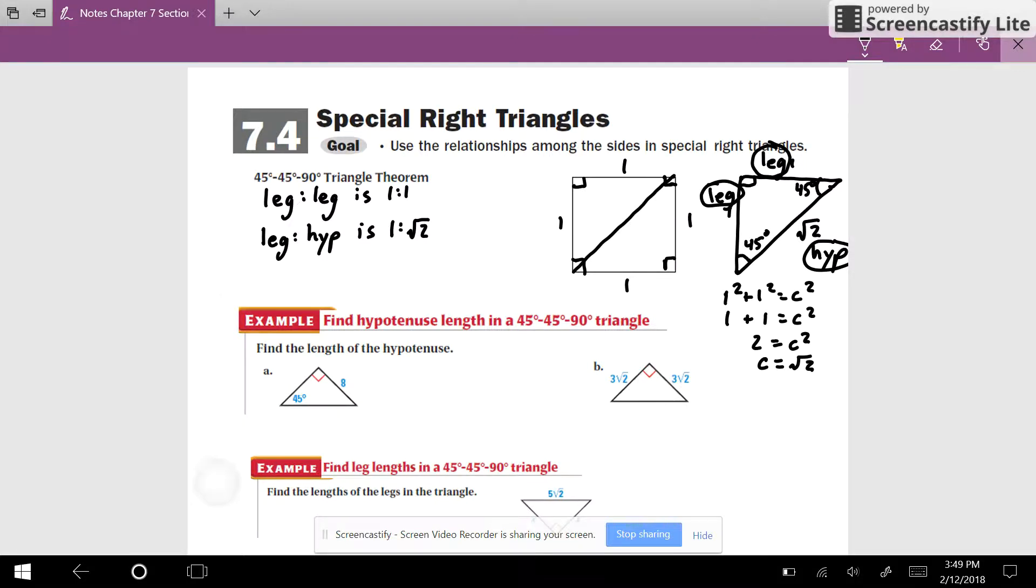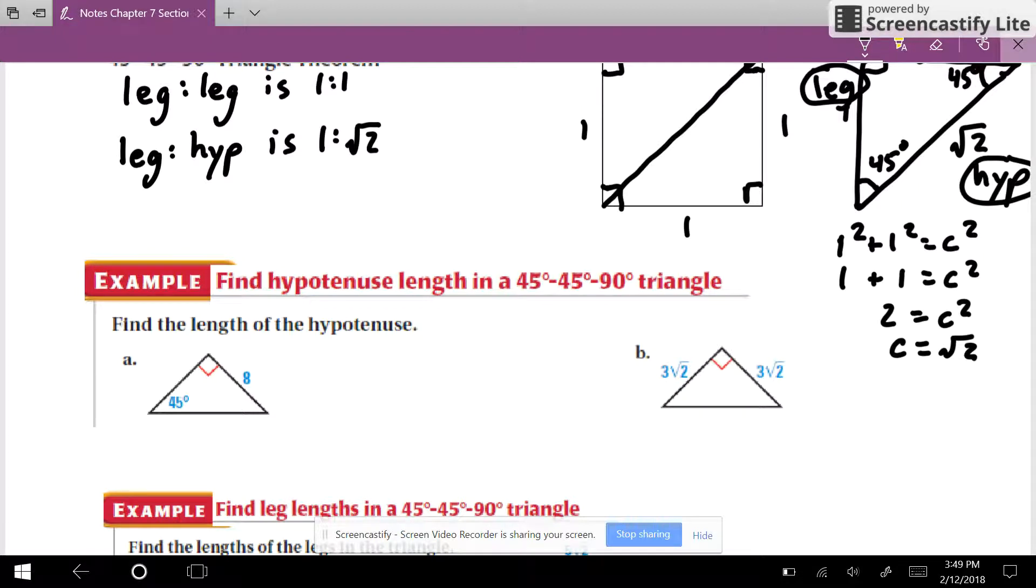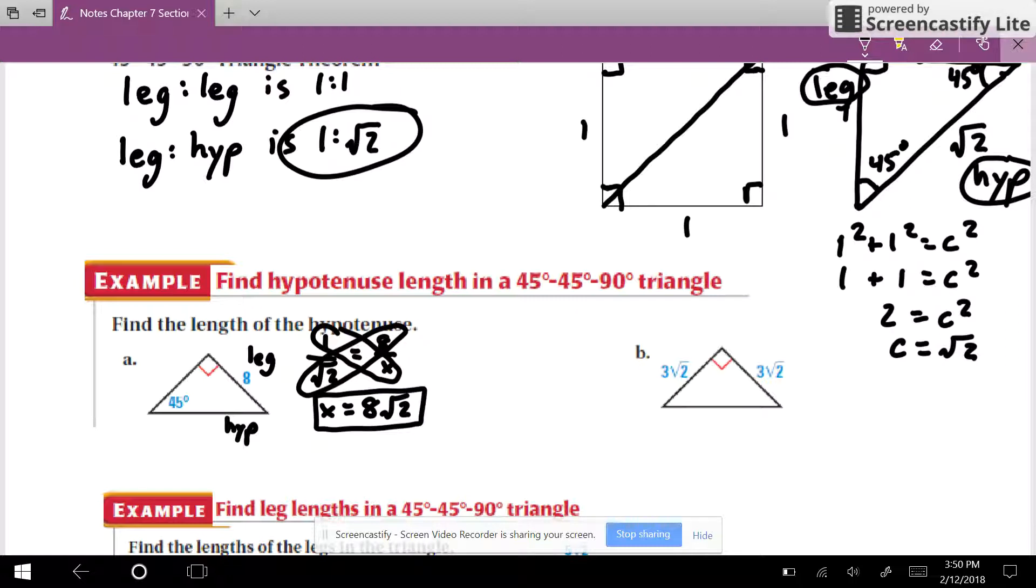So let's look down at this next example and figure out how we can apply this. So 8 is a leg, they're asking for us to find the hypotenuse. So what I am doing here is I'm looking at the leg-to-hypotenuse ratio. Well, my leg is 8, my hypotenuse I don't know, you can call it x if you'd like. And it's equal to my leg-to-hypotenuse ratio, which is 1 to square root of 2. Now I can do my cross product. 1 times x is x equals my other cross product, 8 times square root of 2. 8 square root of 2 is the hypotenuse of this problem.